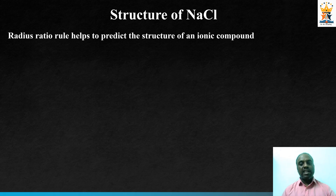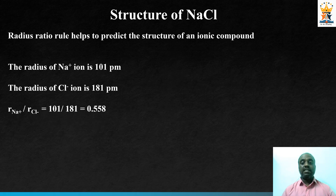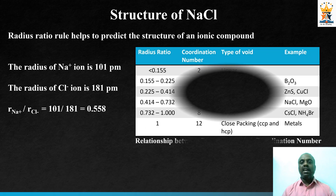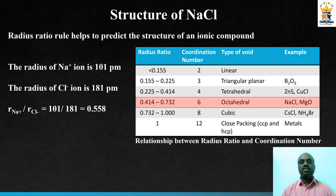The radius ratio — that is, the radius of the positive ion to the radius of the negative ion — gives an idea about the coordination number and the type of void present in an ionic compound. In the case of sodium chloride, the radius of Na⁺ ion is 101 picometers and the radius of Cl⁻ ion is 181 picometers. The ratio is 0.558, which falls in the range 0.414 to 0.732 in the radius ratio rule table. This means the coordination number in NaCl will be 6 and it will have an octahedral void in its structure.